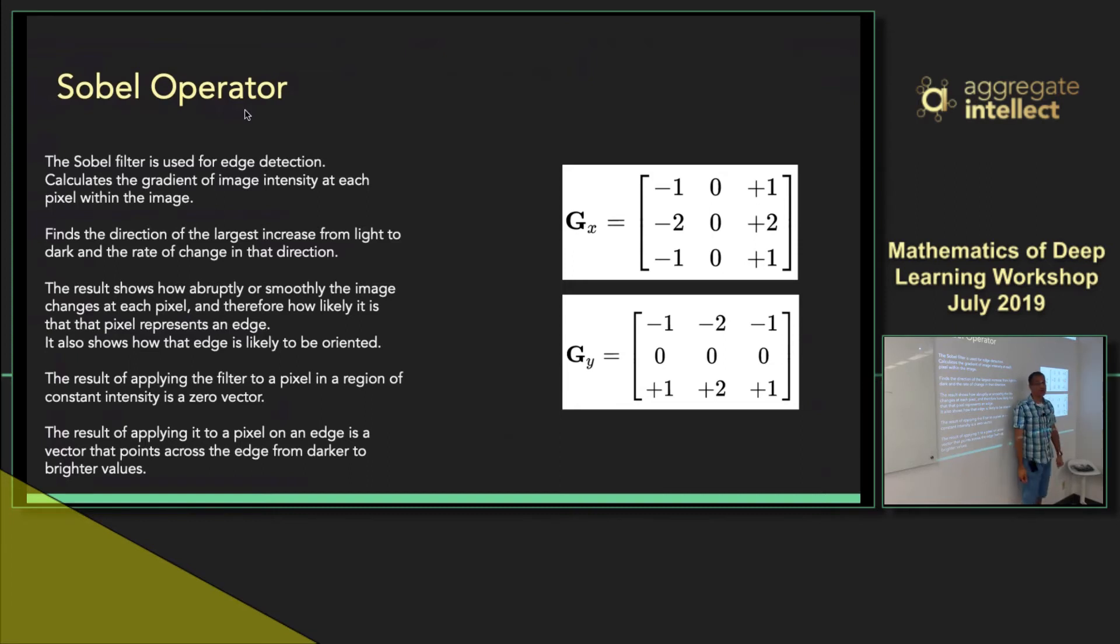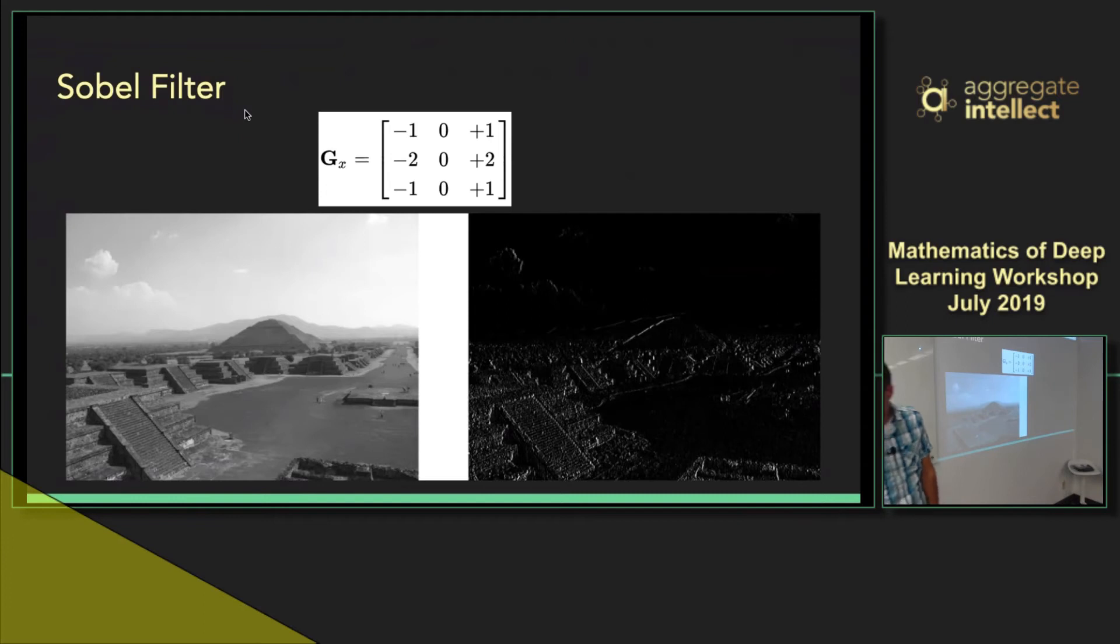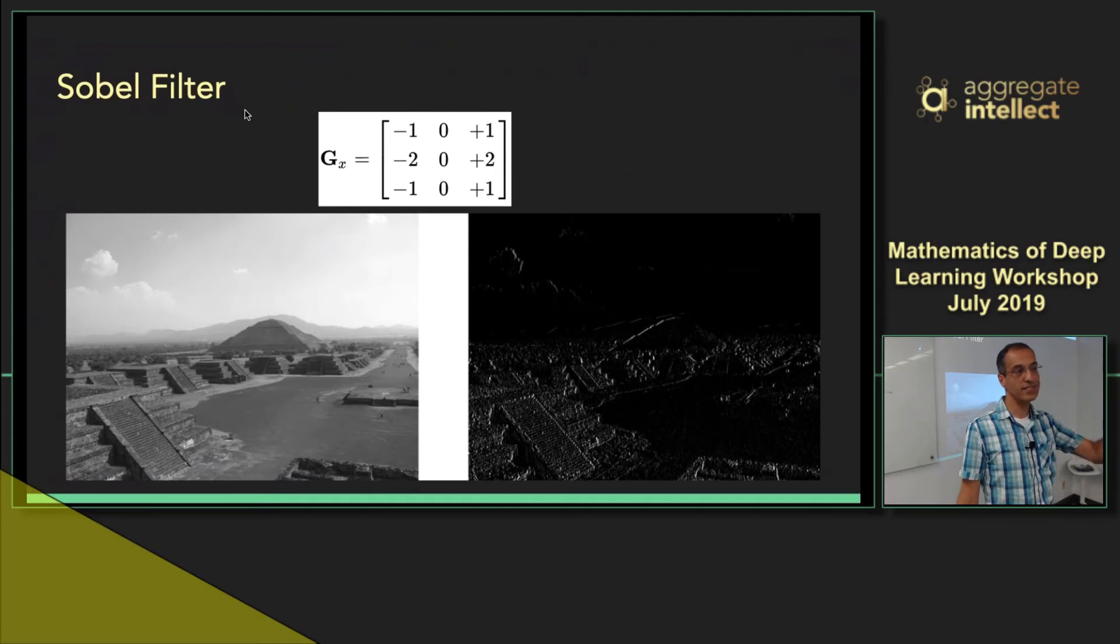And I can do the same thing in the y direction. And in the y direction, now, I have rotated this. So, I take the above row and subtract it from the below row. And I do it around that pixel. So, what happens if I have a bigger kernel? Then it has a different name. We will talk about it. This is the first approximate, the zeroth approximation to taking a derivative in a two-dimensional image. And Sobel came up with it. And it's known as a Sobel filter.